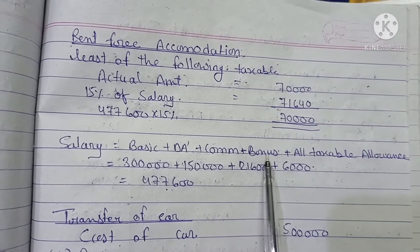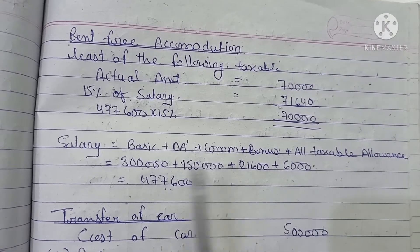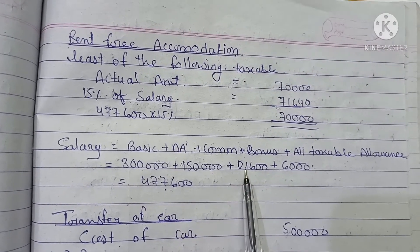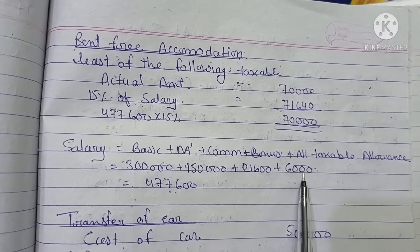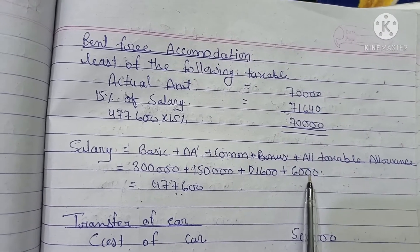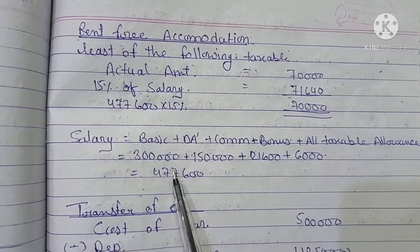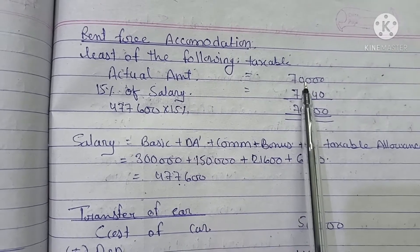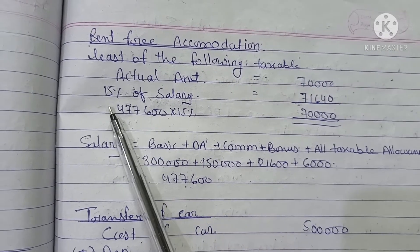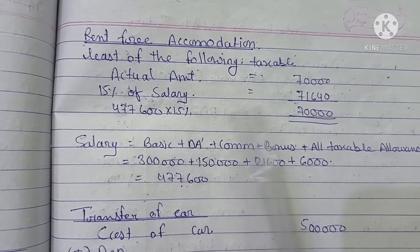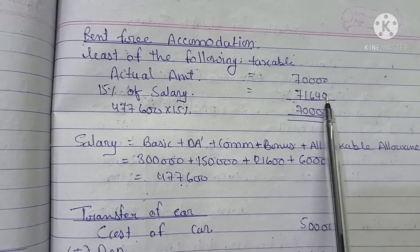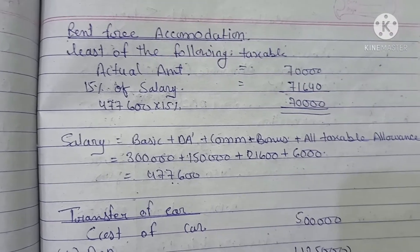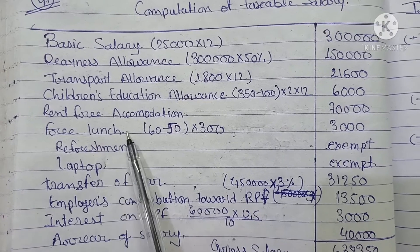For rent-free accommodation, the salary formula includes basic plus DA special plus commission plus bonus plus all taxable allowances. Basic is ₹3,00,000, DA is ₹1,50,000, transportation allowance is ₹21,600, and education allowance is ₹6,000, totalling ₹4,77,600. The actual rent paid is ₹70,000, and 15% of salary comes to ₹71,640. Since ₹70,000 is lower, the taxable value is ₹70,000.